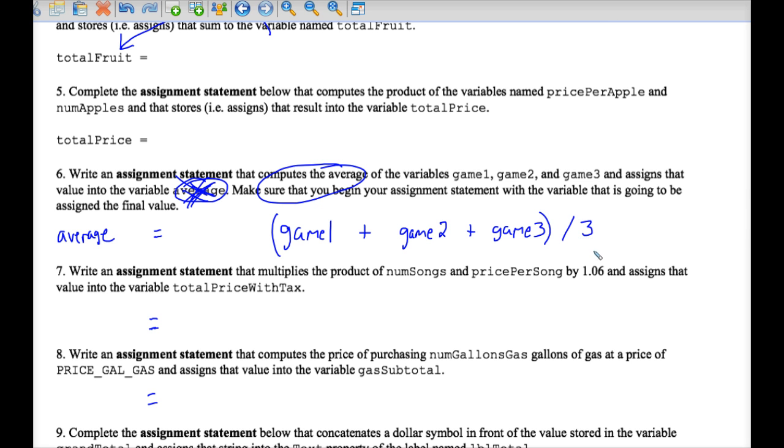And you would just know to divide by three here. If you don't know that, go back to algebra class. So there you go. Game one plus game two plus game three. Parentheses divided by three is the right-hand side of this assignment statement. Now you might ask me what numbers are going to be plugged in there. I have no clue.